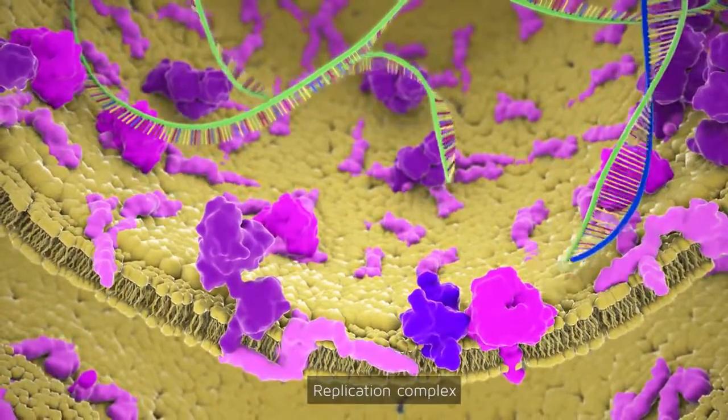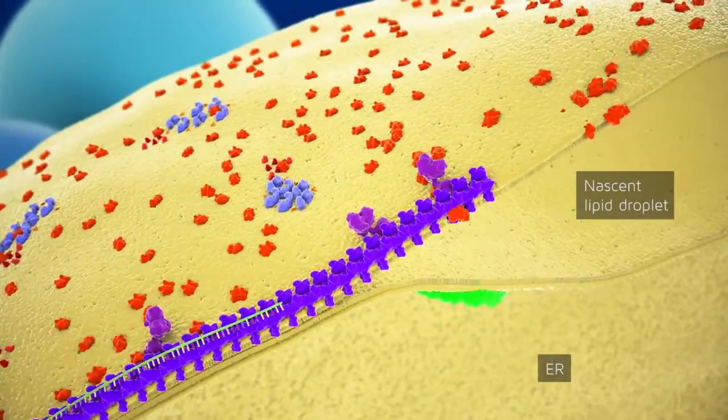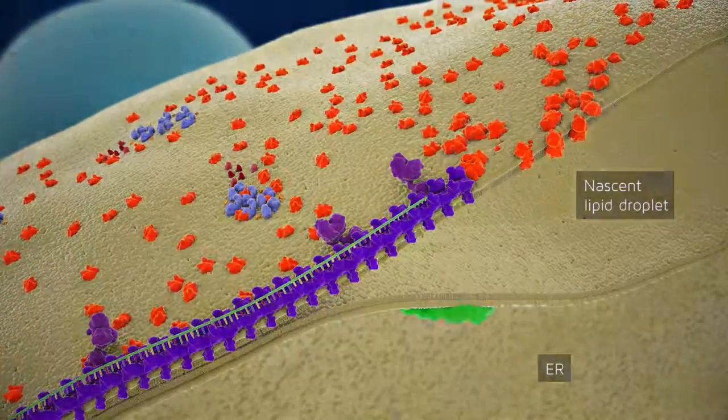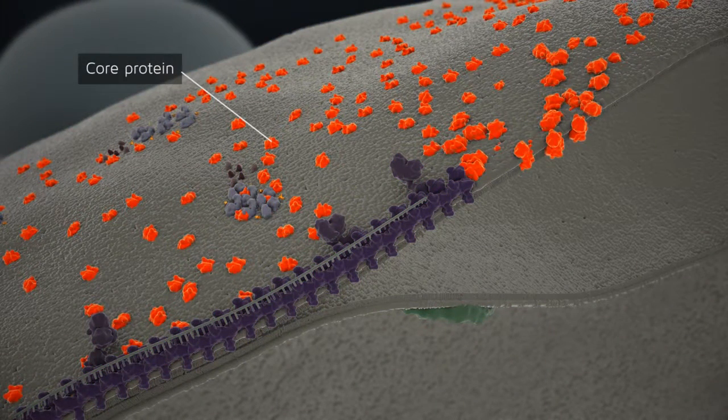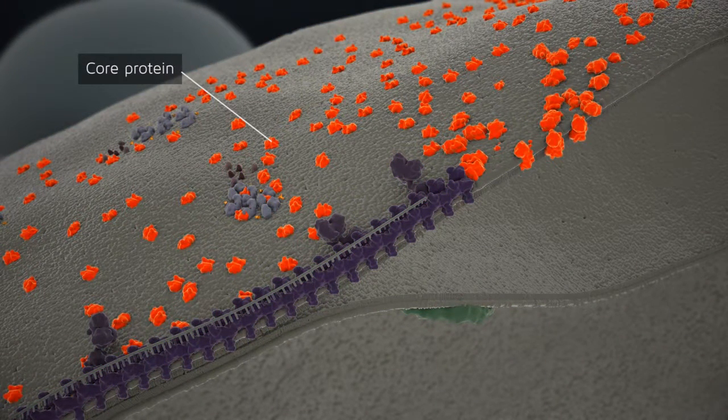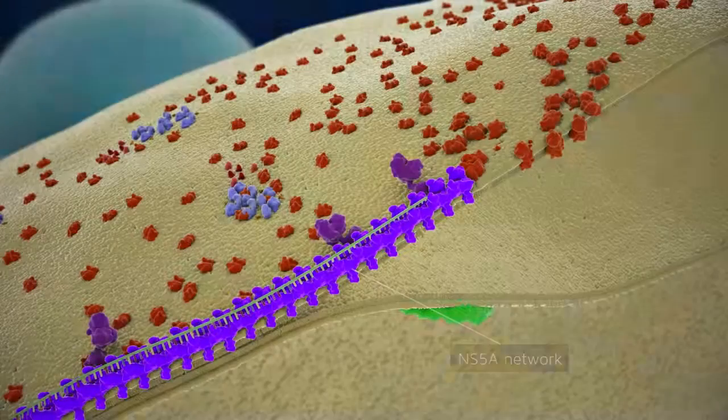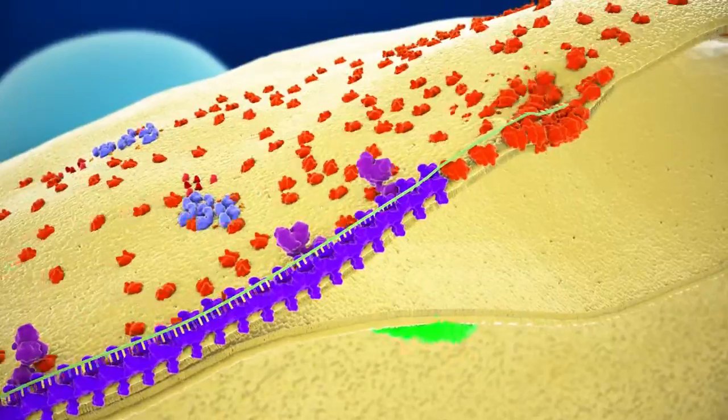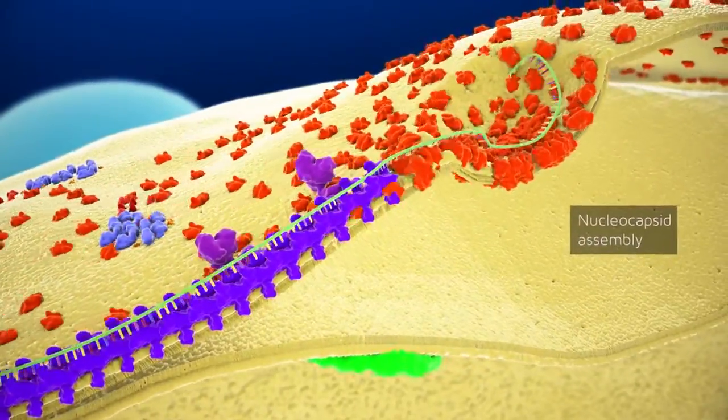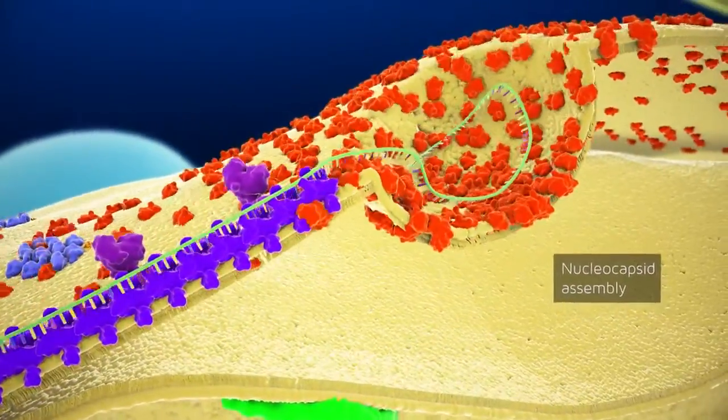Progeny RNAs are either used for translation and replication or packaged into nucleocapsid particles. The latter process is thought to be initiated on the surface of lipid droplets that are targeted by the core protein. It is assumed that a network of NS5A delivers the viral RNA to core proteins for assembly into nucleocapsids.